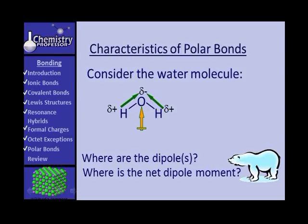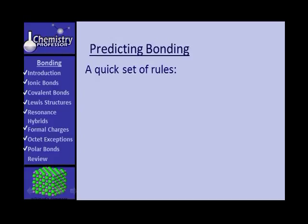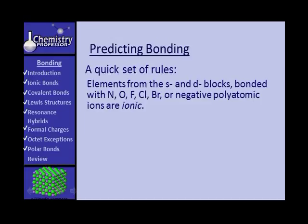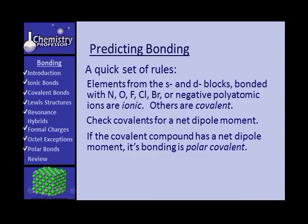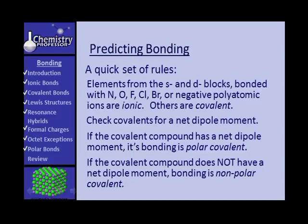Well, let's continue with this. Let's do a review of the bond types and talk about how to predict. There's a quick set of rules we can use. Remember what we said about ionic bonding, that if you have elements from the S and D blocks bonding with nitrogen, oxygen, fluorine, chlorine, bromine, or negative polyatomic ions, those bonds are probably ionic and others are some form of covalent. And if you think you're dealing with a covalent structure, you better check for a net dipole moment. If the covalent compound has a net dipole moment, the bonding is then polar covalent. If the covalent compound does not have a net dipole moment, bonding is nonpolar covalent.